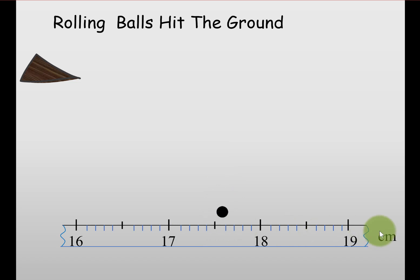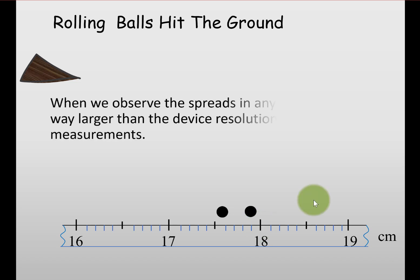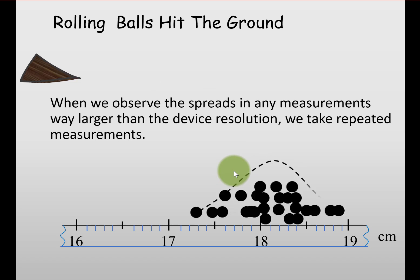When we roll next, it lands far from there, nearly 18 centimeters. This spread is way larger than the resolution of this device, which is a tenth of a centimeter. When this spread is larger than the resolution of the device, we keep rolling again and again.